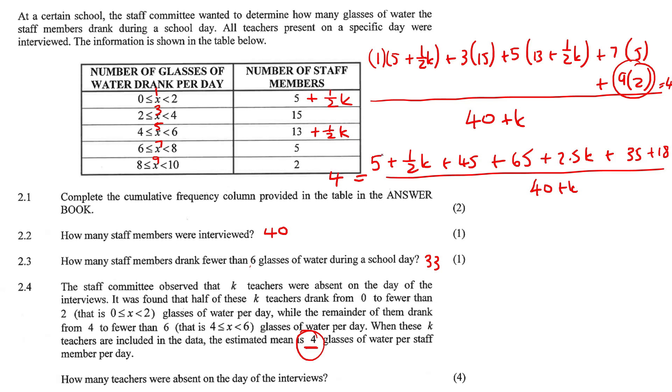Now I'm just going to simplify a little bit. So 5 plus 45 plus 65 plus 35 plus 18. If we add all of that together, we get 168. And then if you add these together, that'll give you 3K. And then over 40 plus K. And that's all equal to 4.